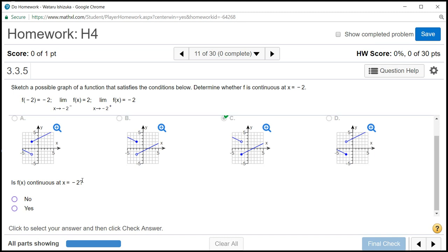Remember that for a function to be continuous at a point, the limit value and the function value must be the same. And in this case, at x equals negative 2, you can see that the left-hand limit and the right-hand limit do not agree with each other, which means that the limit doesn't even exist there. So therefore, it cannot be continuous. So the answer is no.